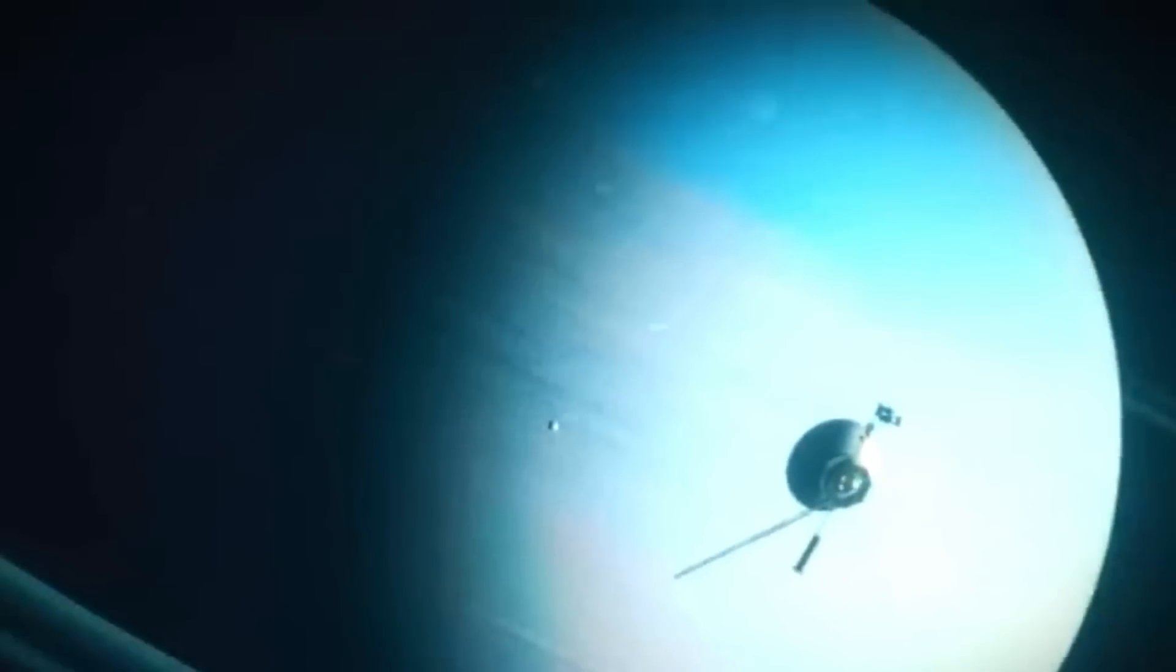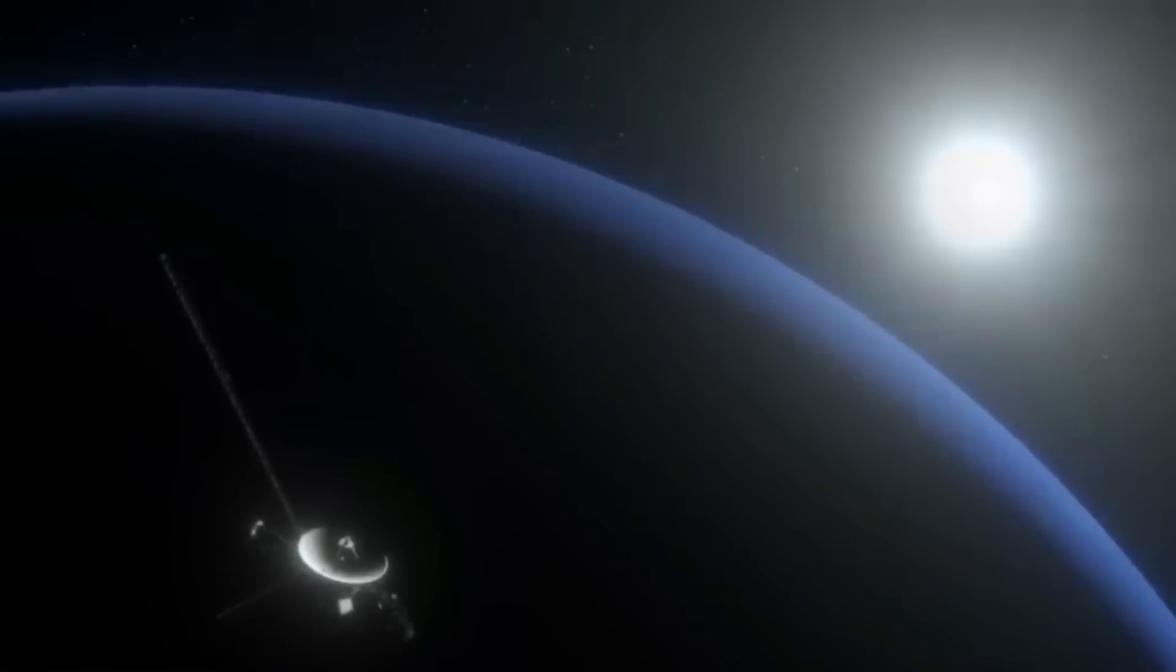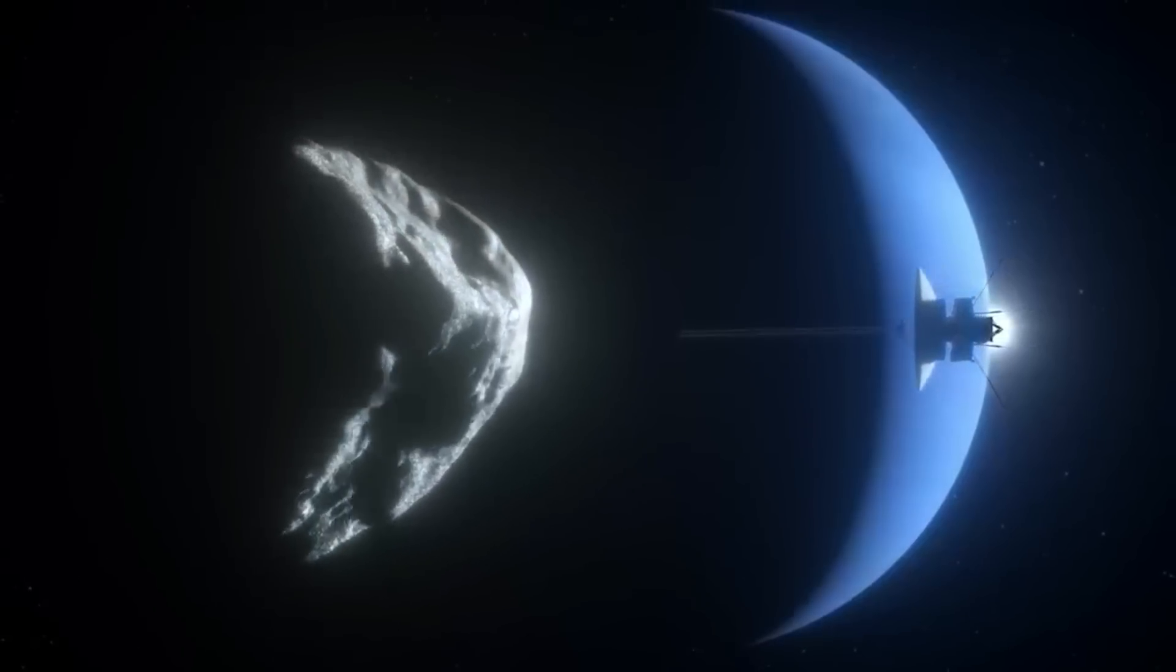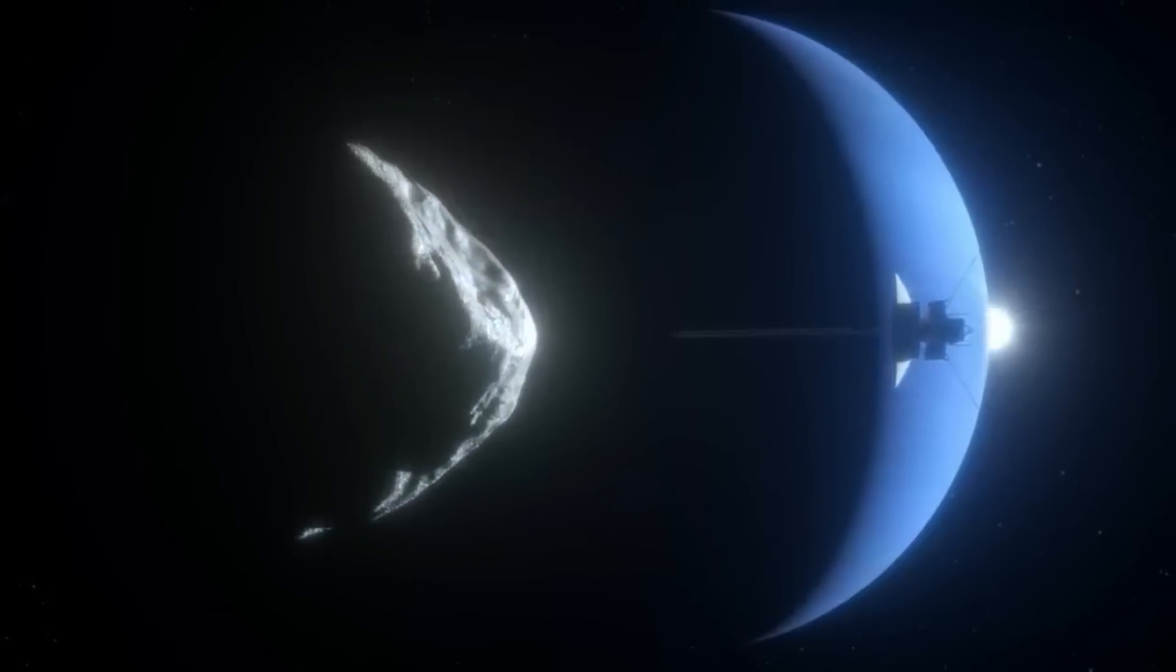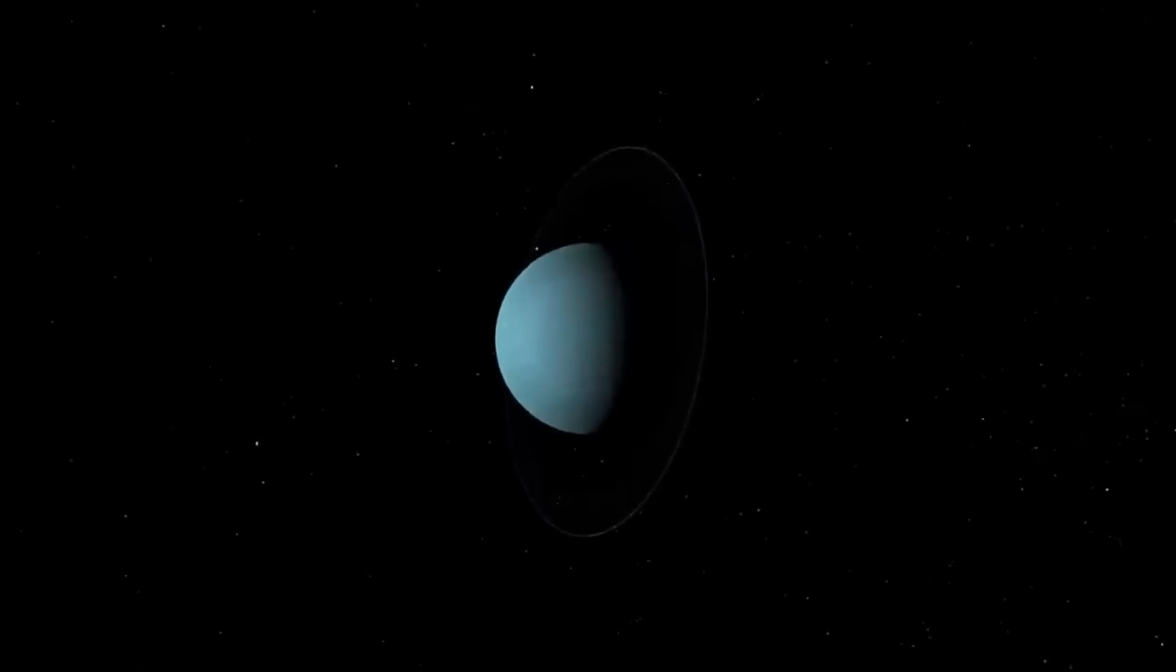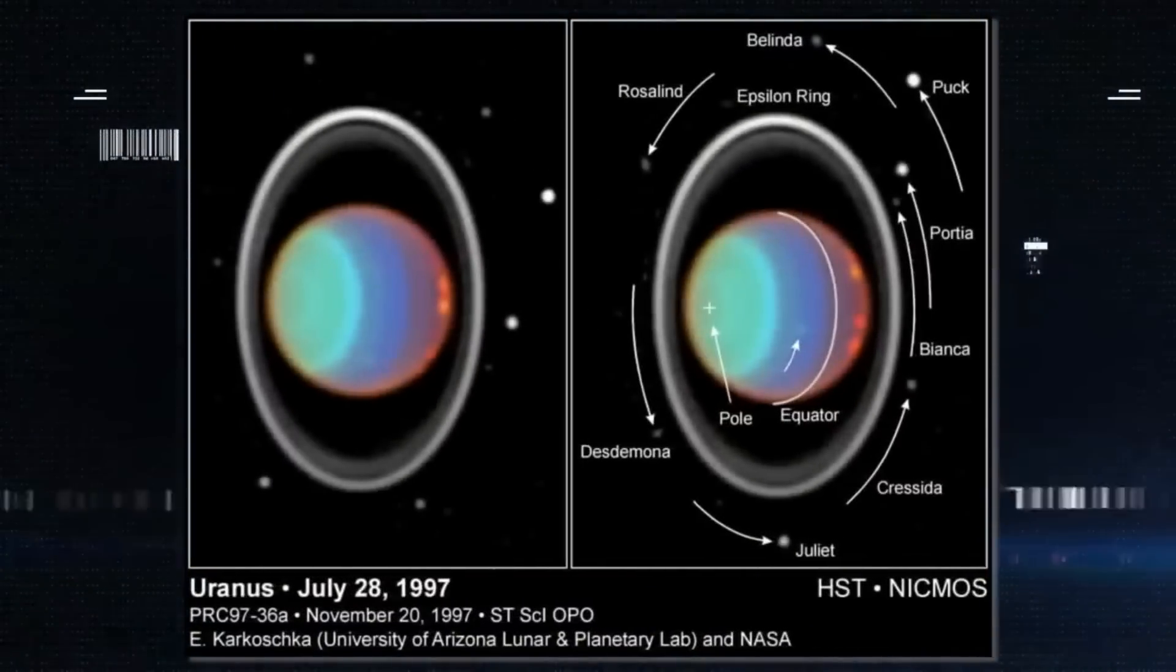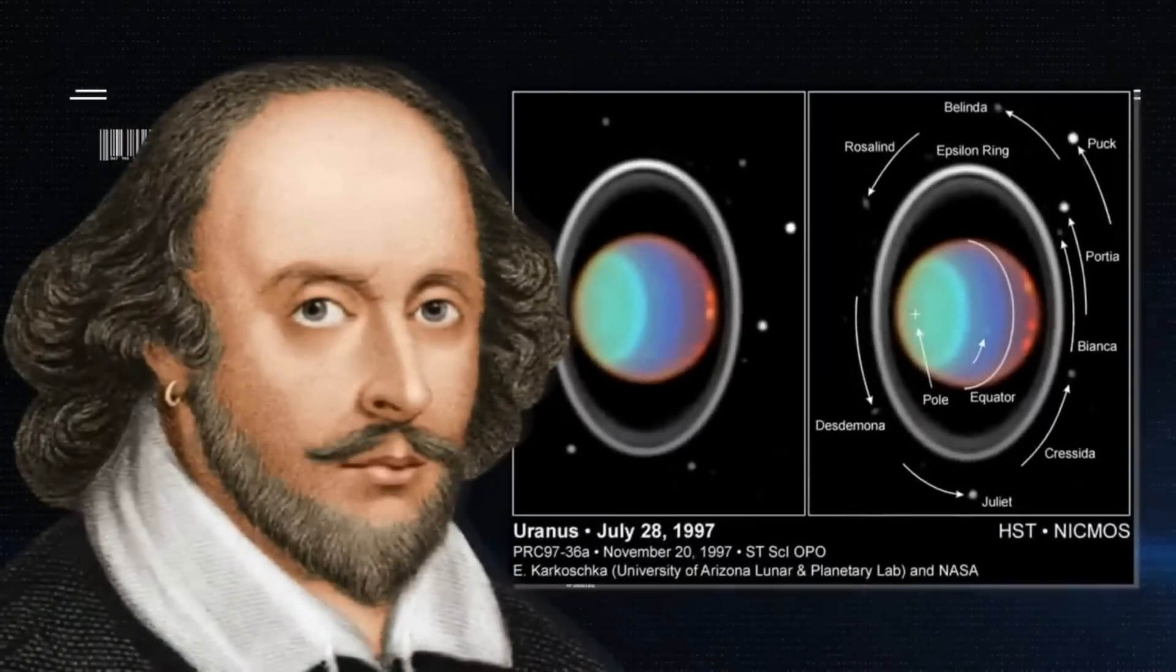At 1759 UT, January 24, 1986, Uranus came within 50,640 miles or 81,500 kilometers. Voyager 2 discovered 10 new moons, named Puck, Portia, Juliet, Cressida, Rosalind, Belinda, Desdemona, Cordelia, Ophelia, and Bianca, all Shakespearean references.